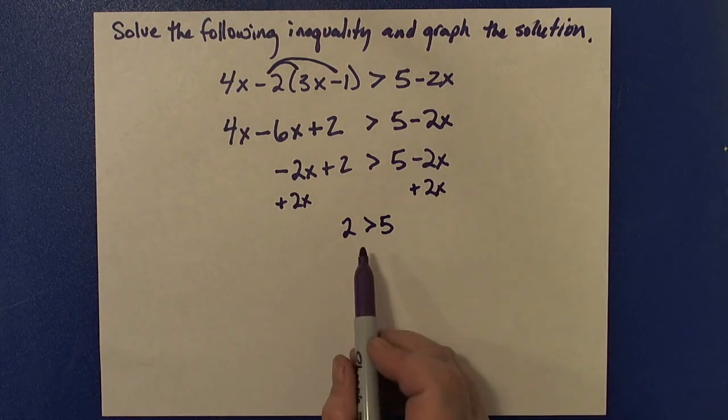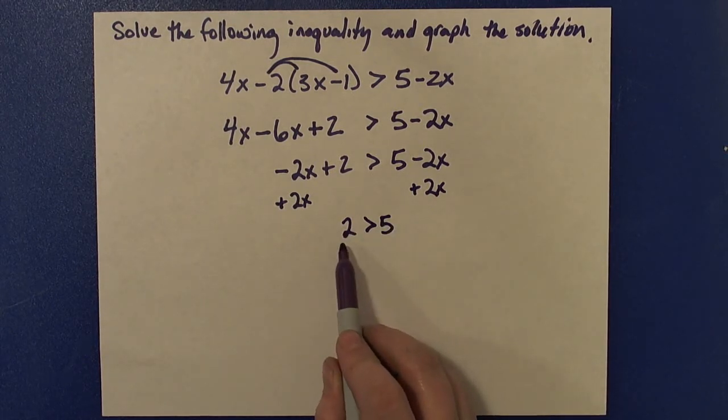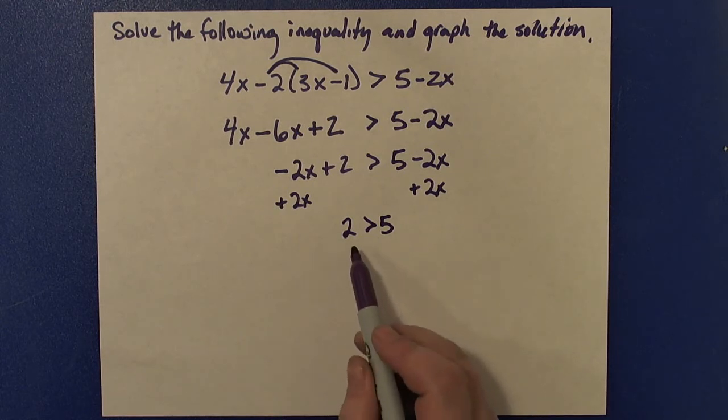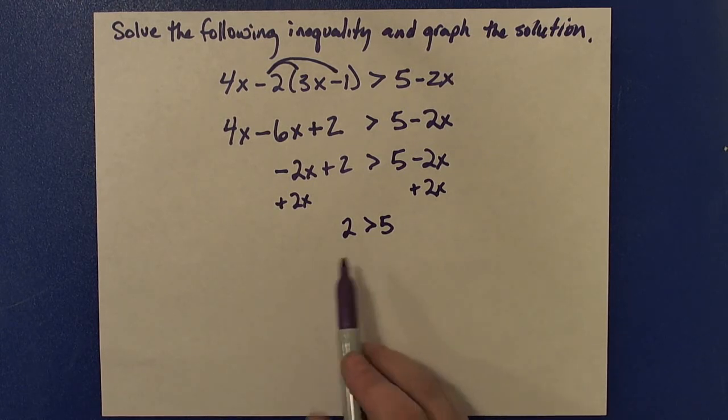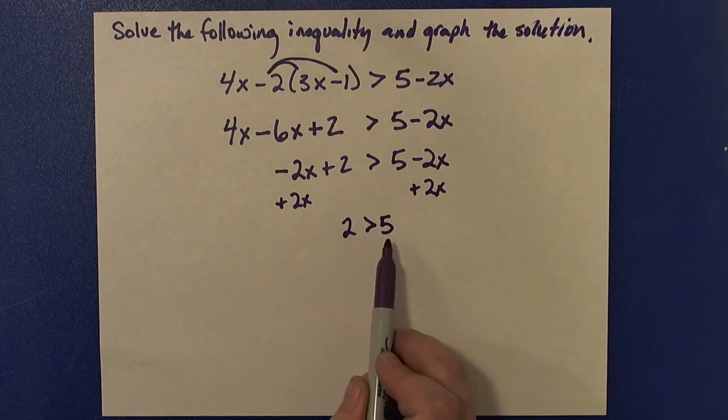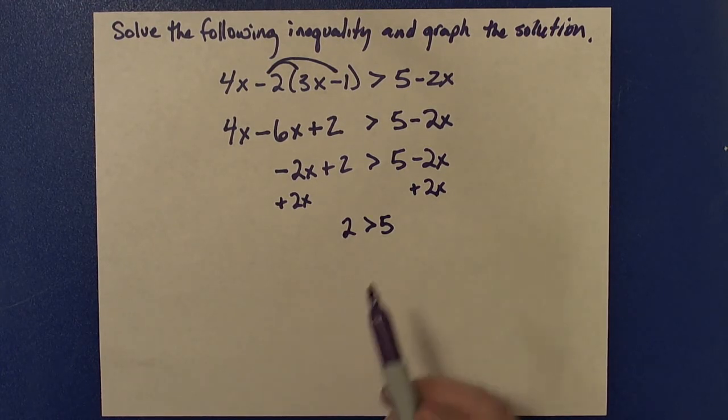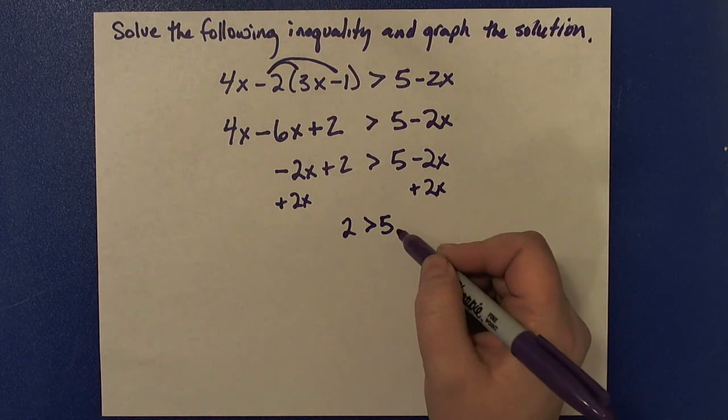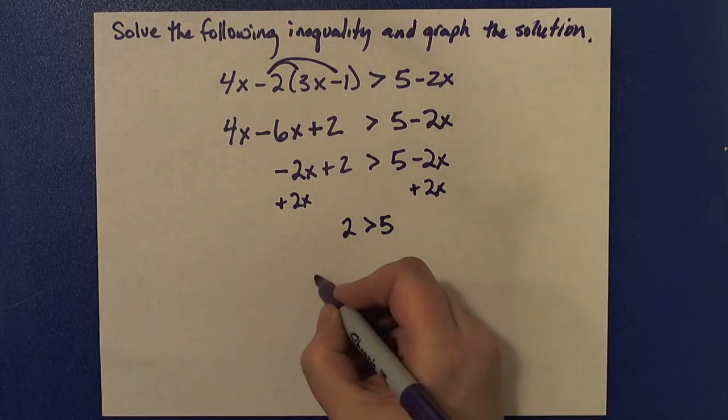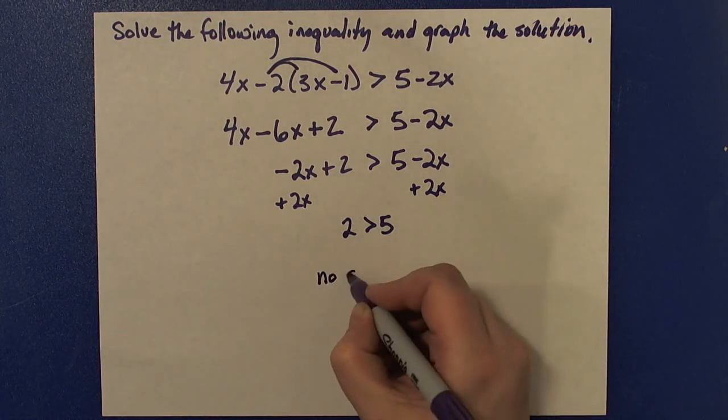When we end up with no variables in our final inequality, we have to look at it and determine if it is always true or never true. And I look at this, 2 is greater than 5. That's something that is never true. When you reach a situation and you have something that is never true, the answer is going to be no solution.